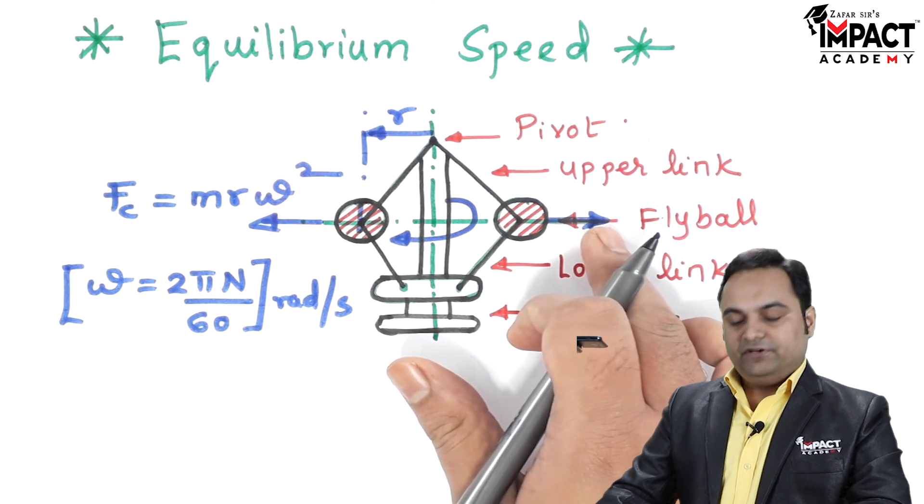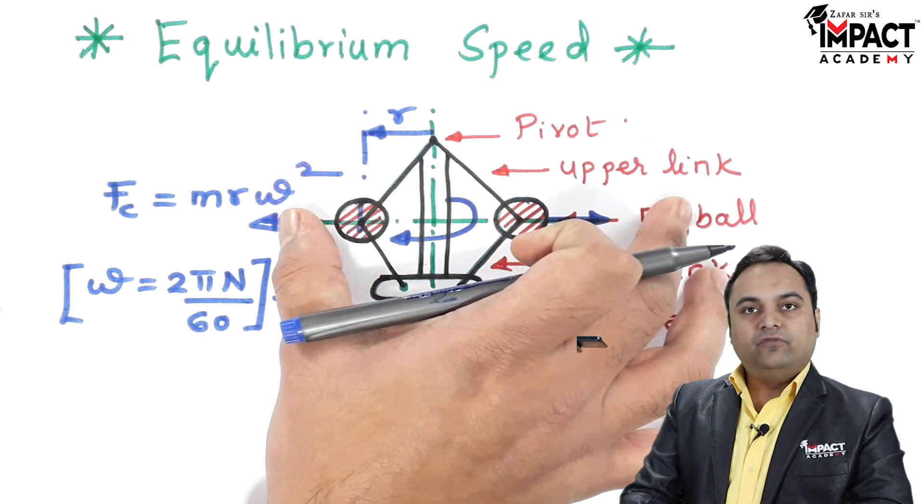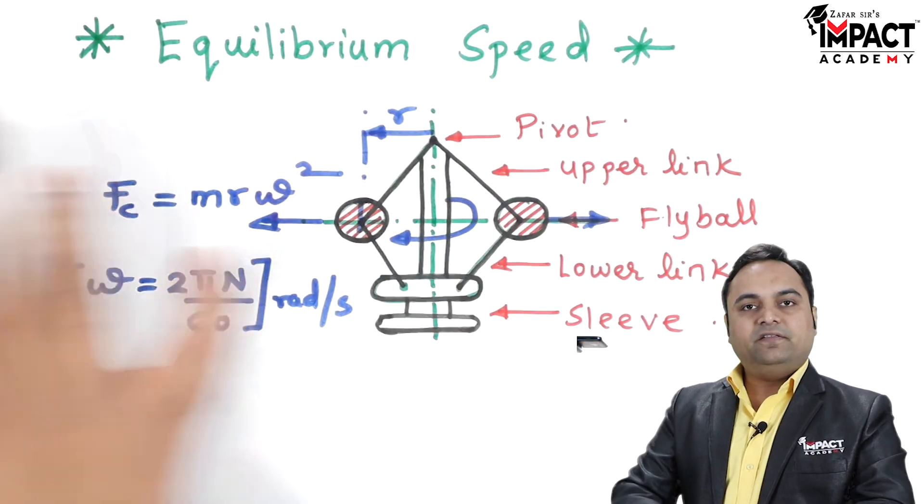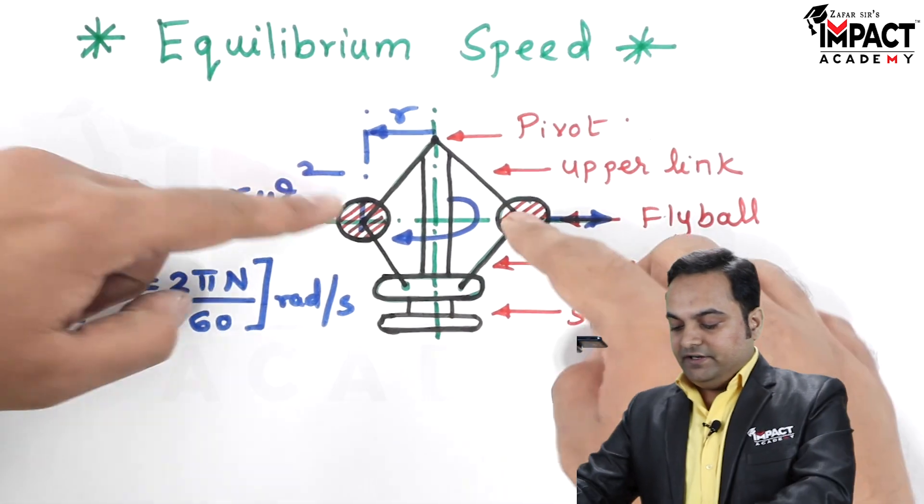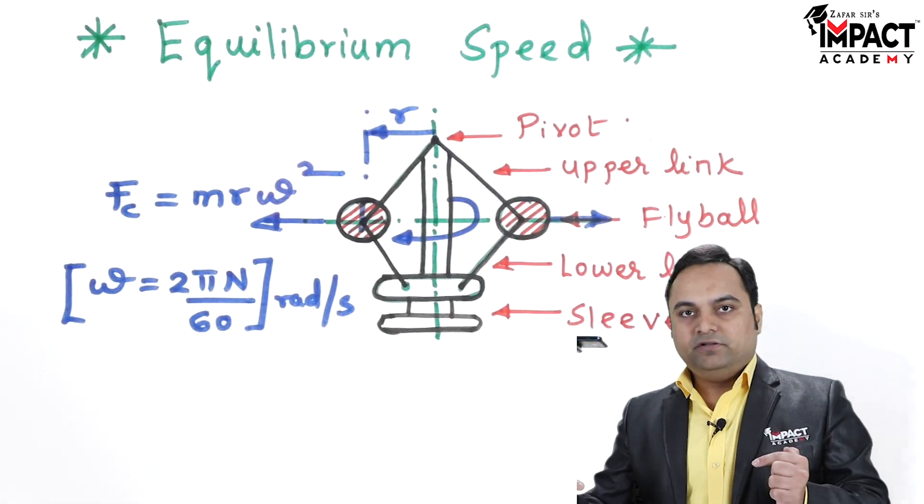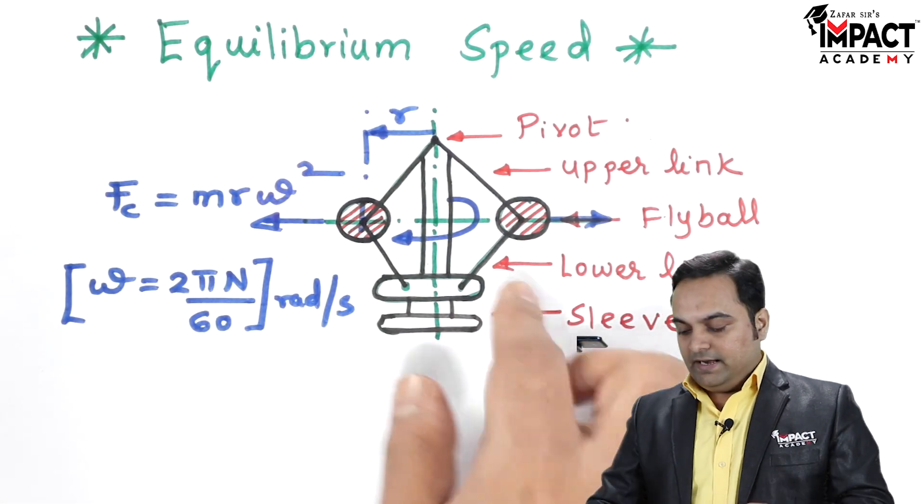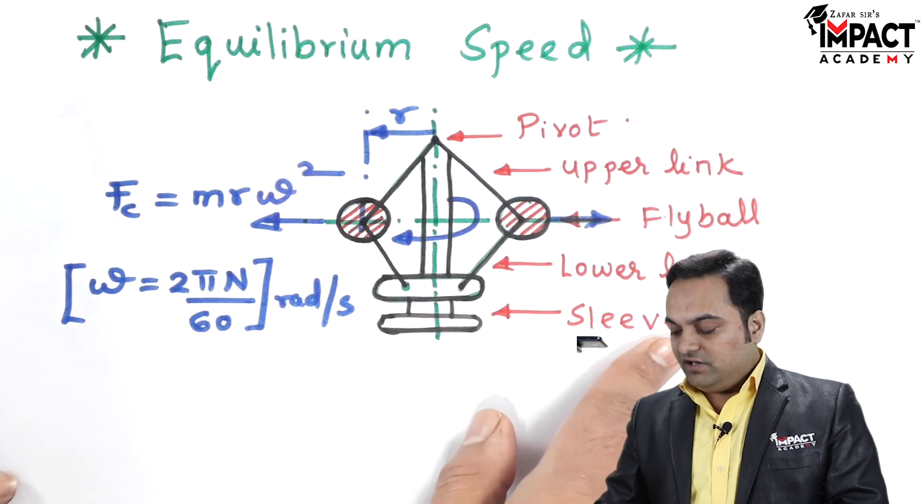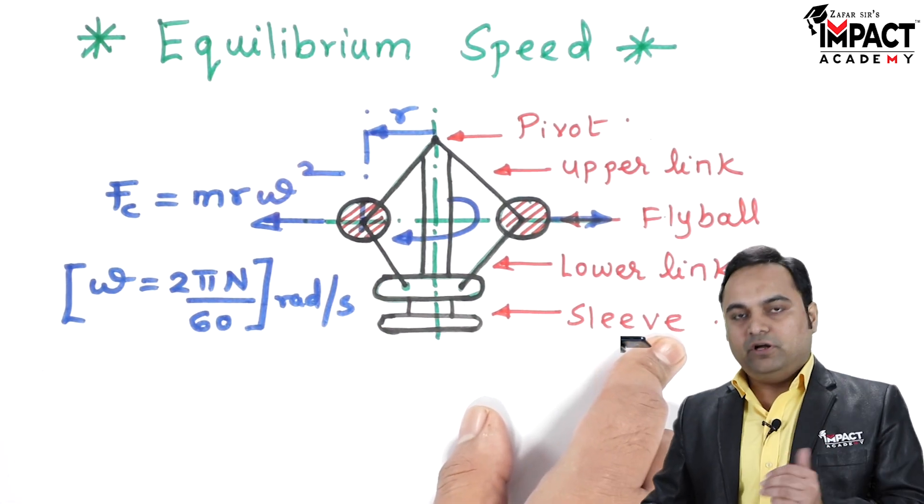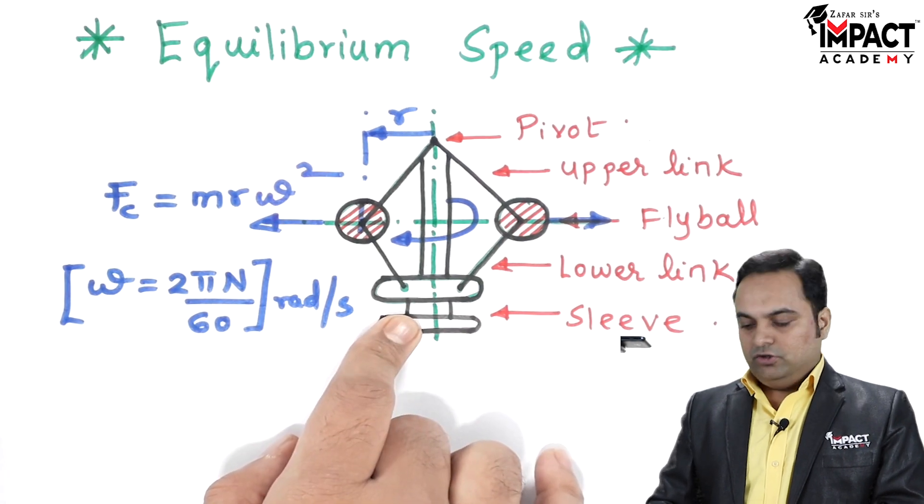Due to the increase in centrifugal force, the balls are going to move away. Now equilibrium speed is that speed at which the radius of the balls would be fixed, that is they would be rotating only at a particular radius and the sleeve won't be moving up and down.